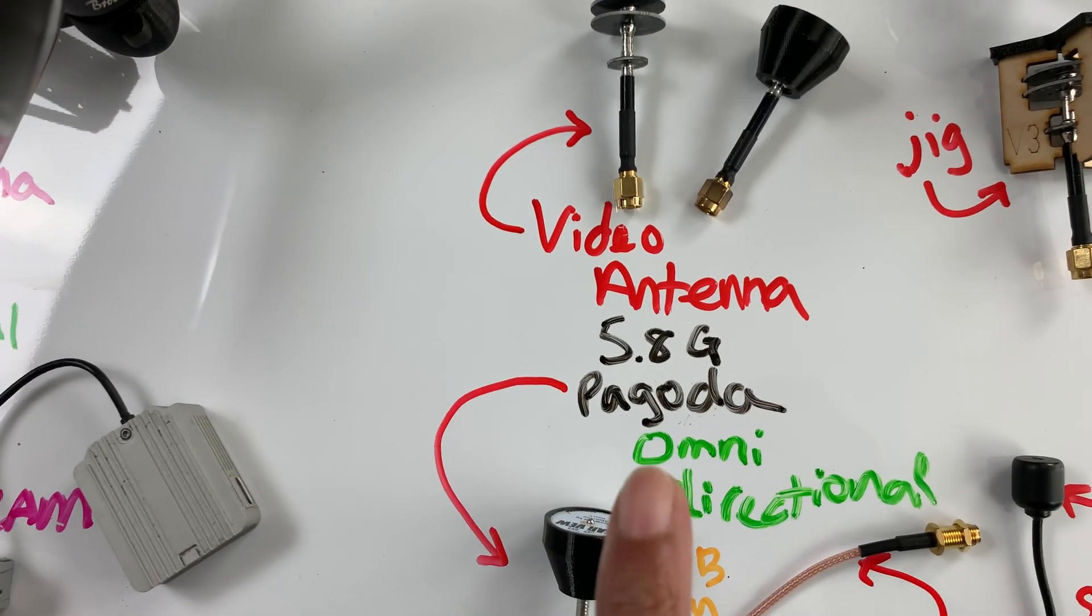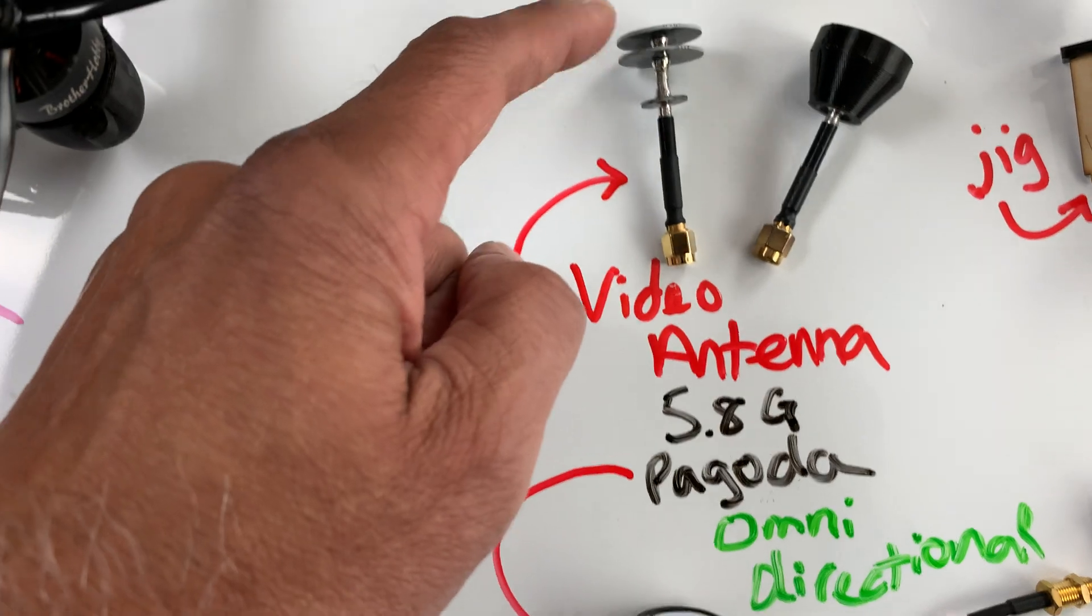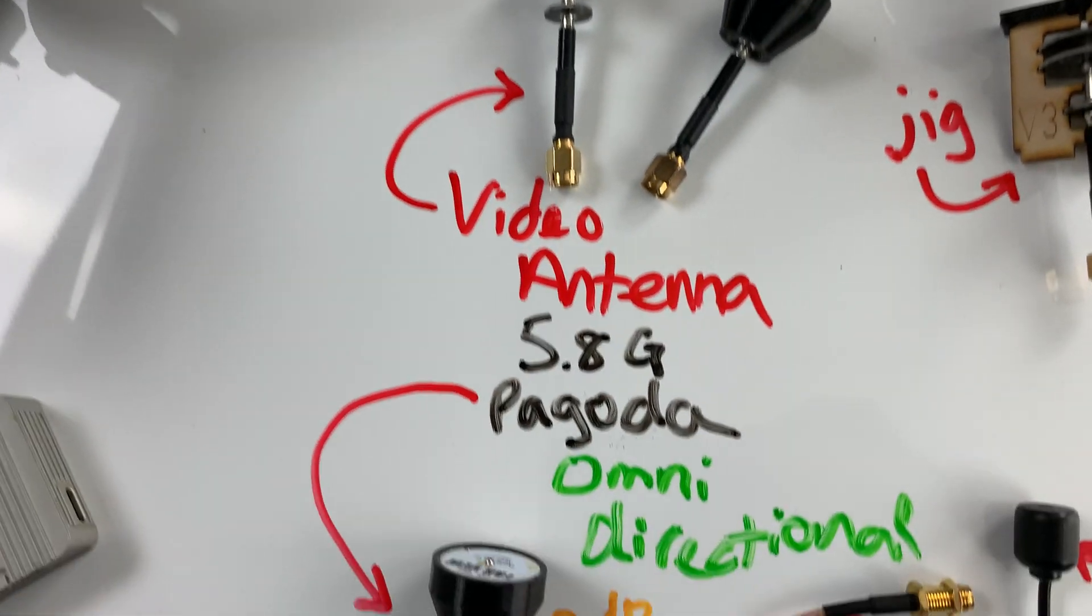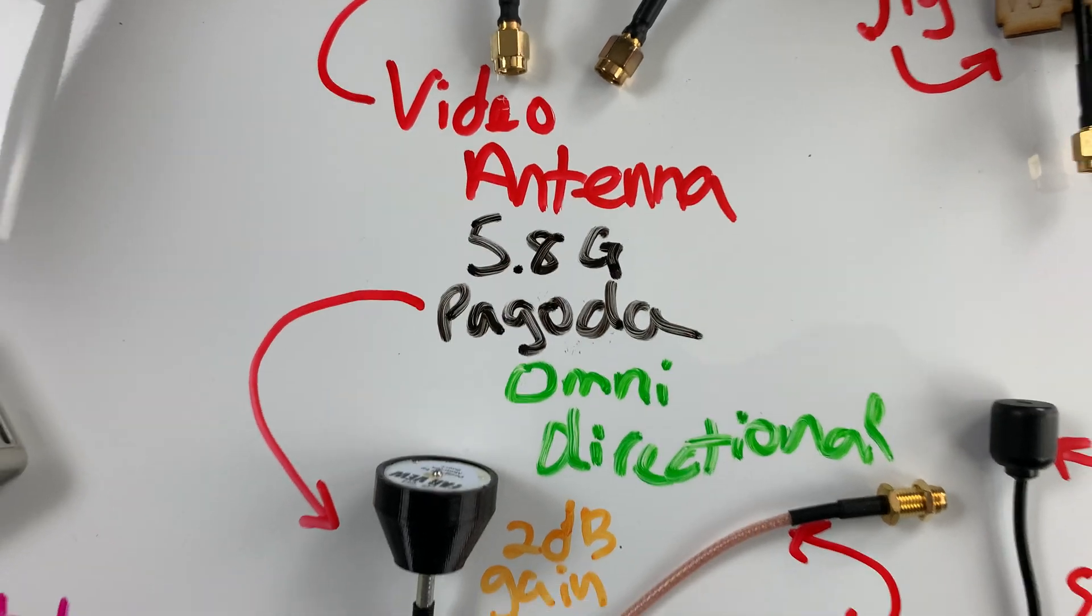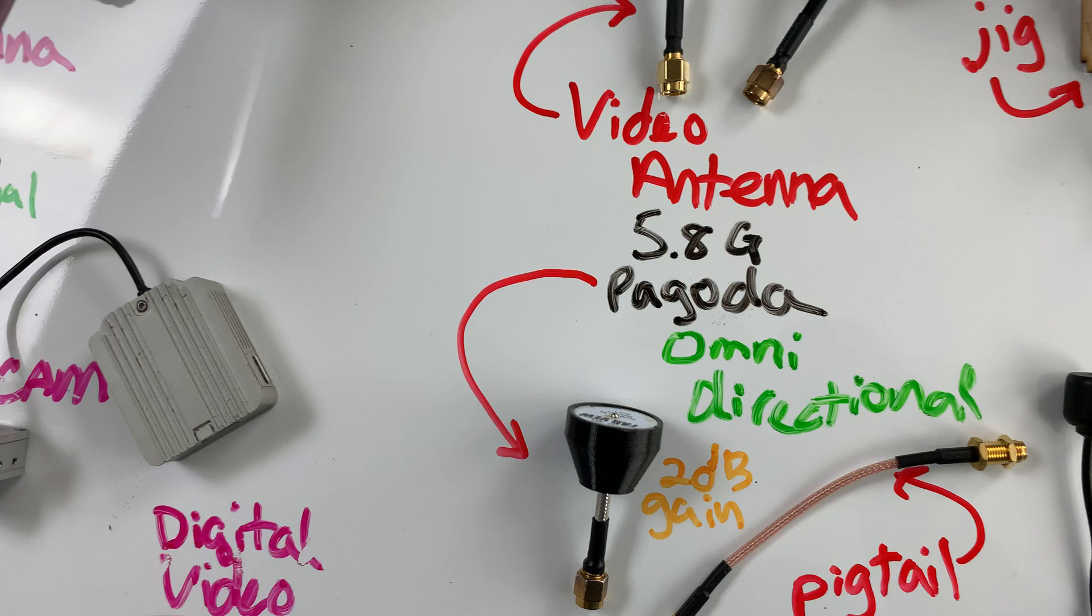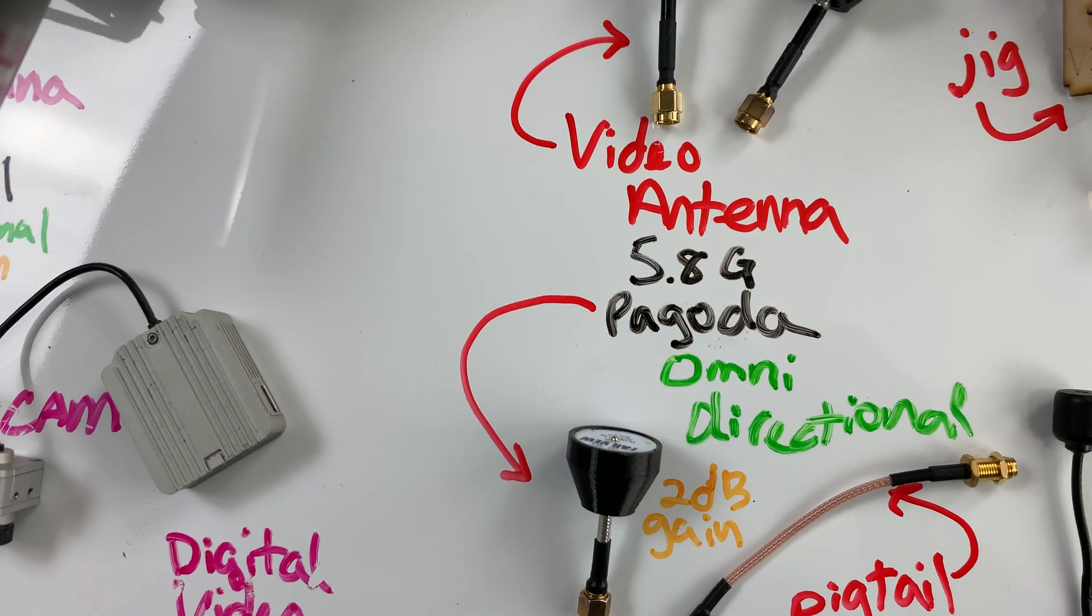But they're also 5.8 gigahertz. And the design is called Pagoda because of the layers of boards there on the antenna. And they are omnidirectional. So they put out a pattern that's more of an apple-shaped pattern, you know, sort of a dimple on each on the top and the bottom.